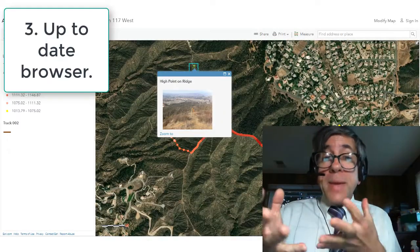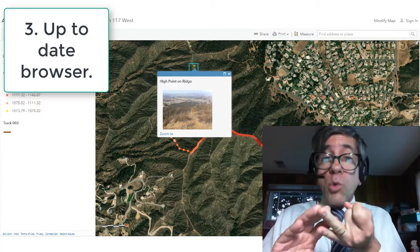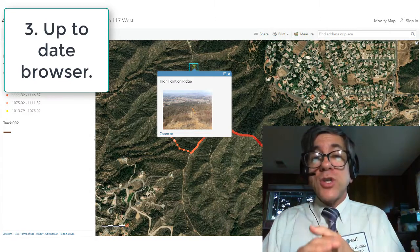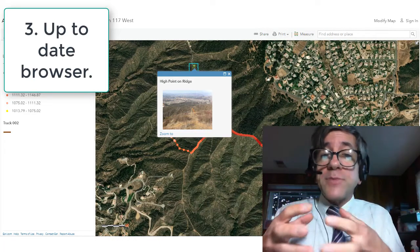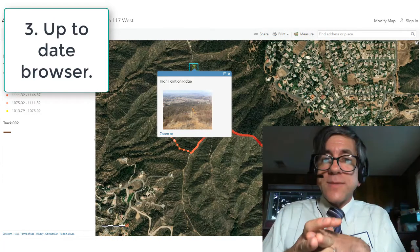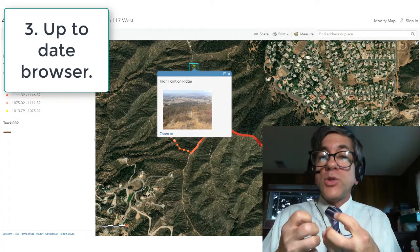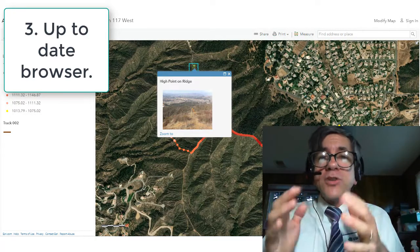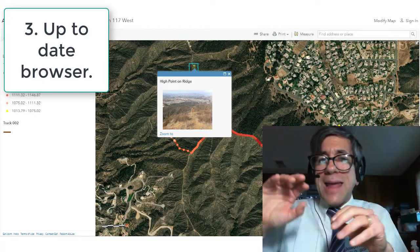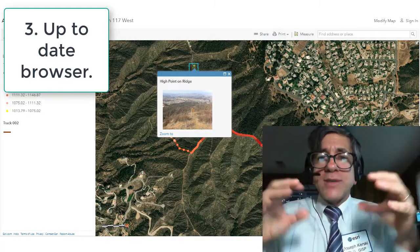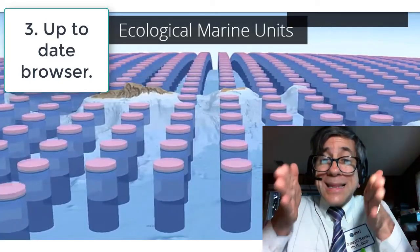Number three: to take advantage of these web-based technologies, you need to be using a new-ish version of a standard web browser, such as Firefox, Chrome, Safari, Internet Explorer, or Edge. A five-year-old web browser may not work well with all of the interactive maps and other tools. Also, these web mapping tools work best when your browser is not laden with add-ons like Ask Jeeves and other toolbars. Get rid of those — a clean web browser is best.